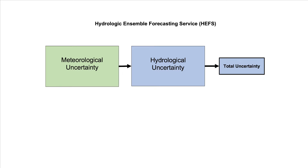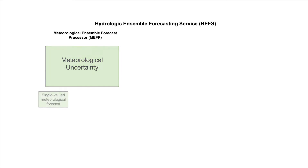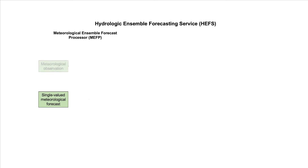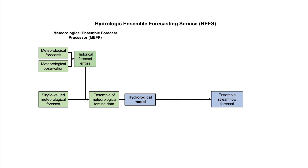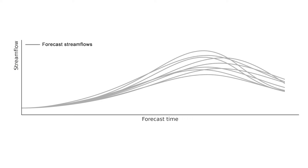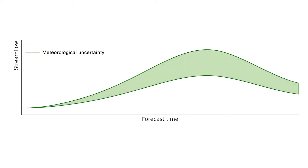The meteorological component of HEFS is called the Meteorological Ensemble Forecast Processor, or MEFP. In the first step of HEFS, MEFP combines a current single-value forecast with historical forecast error information to create an ensemble of meteorological inputs, or forcing data, for the hydrological model. The hydrological model then translates the ensemble of meteorological forcing data into an ensemble of streamflow forecasts, represented as a range of values with associated probabilities. This is the uncertainty in the streamflow forecast generated by the meteorology.